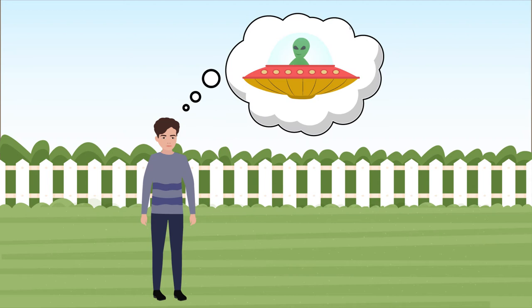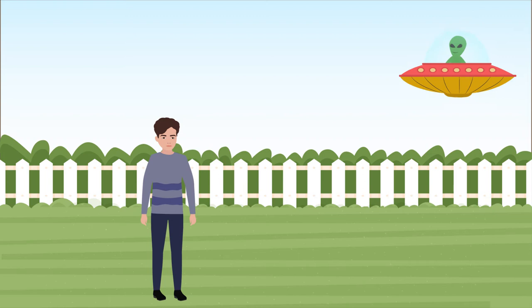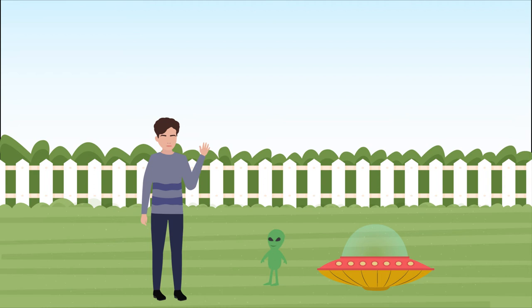A belief is any claim that you accept. A true belief is any claim that you accept that corresponds to things in the world. And a justified true belief is a true belief that has proper evidence.